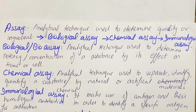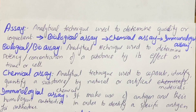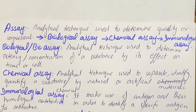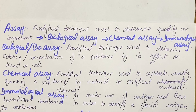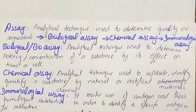Immunological assays are those kinds of assays which make use of binding between antigen and homologous antibodies in order to identify or quantify the specific antigen or antibodies. By this, what we mean is that there is binding of antigen and antibodies, and by that binding we can identify or quantify the specific antigen present for a particular antibody.